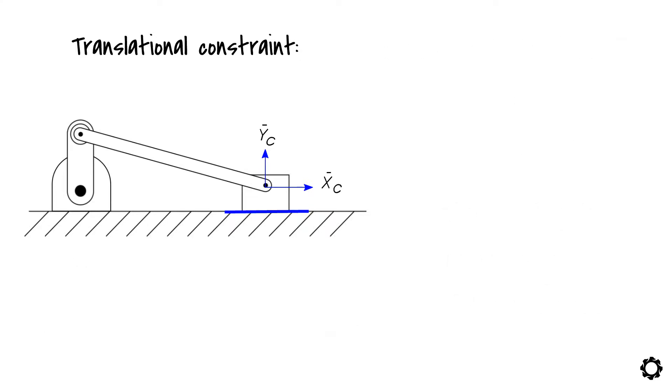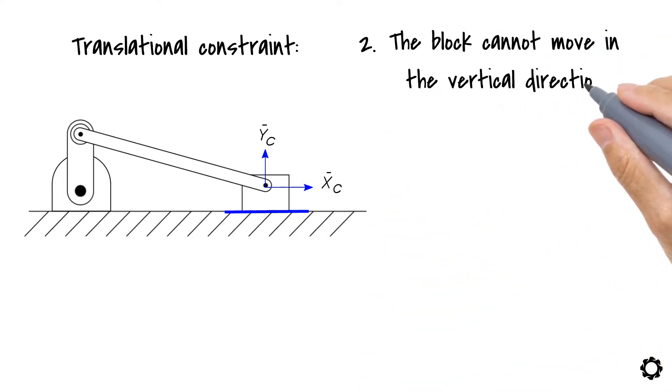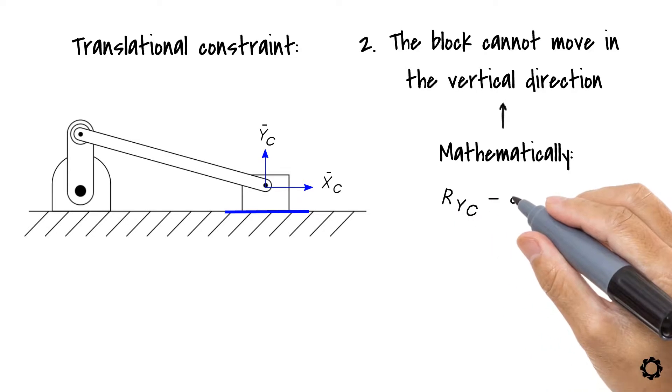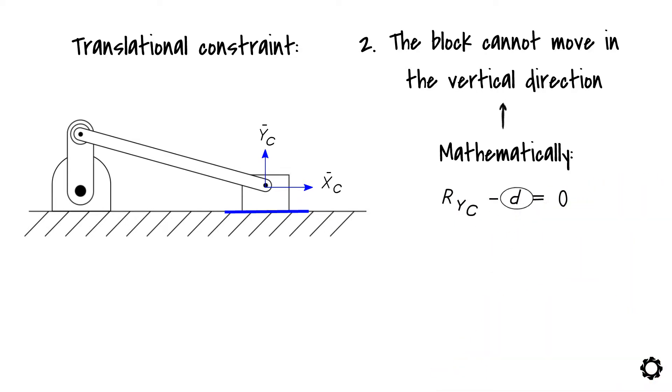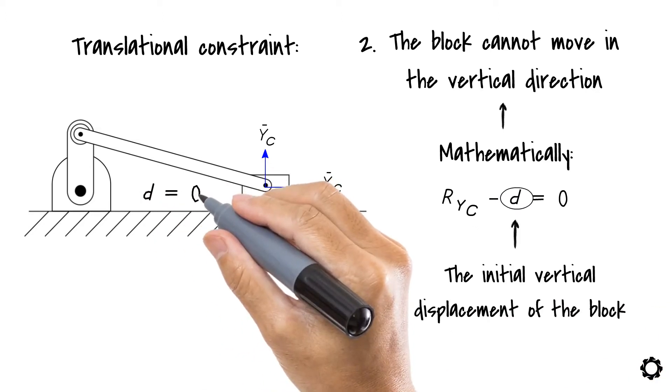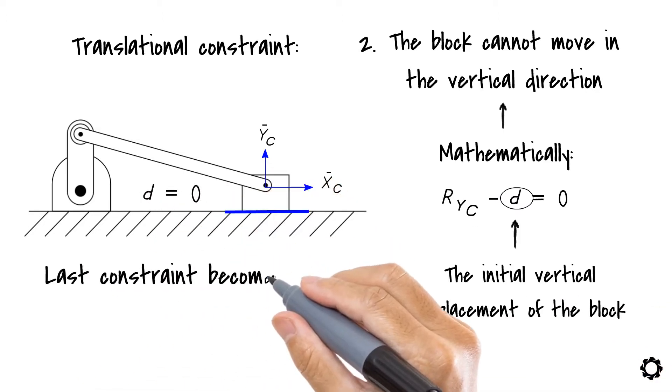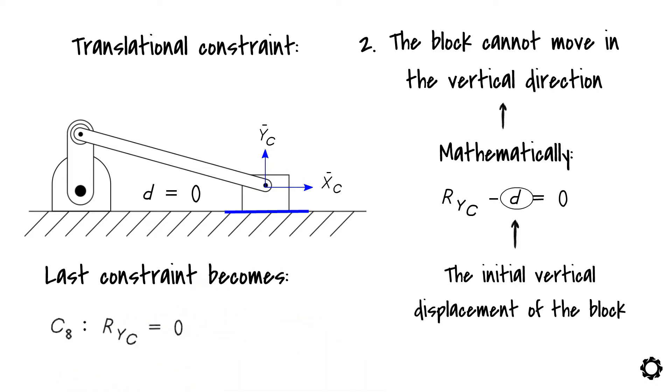Our final constraint tells us that the block cannot move in the vertical direction. We can mathematically express this condition by saying that RYC minus D equals zero. Constant D represents the initial vertical displacement of the block. For our mechanism, this initial distance is zero. Our last constraint becomes C8 is RYC equals zero.